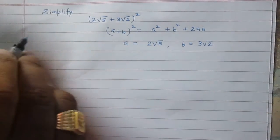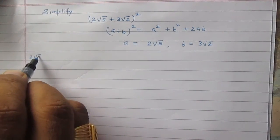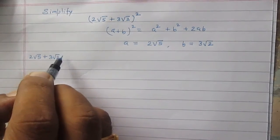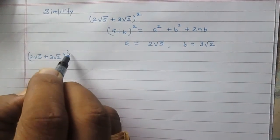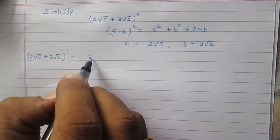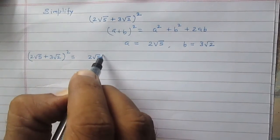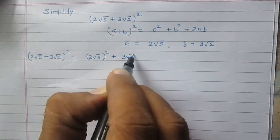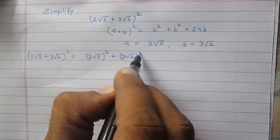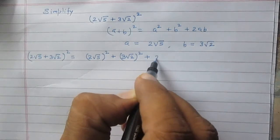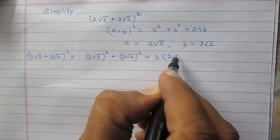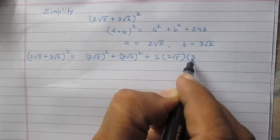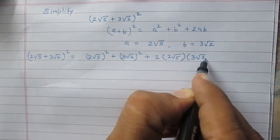We can write (2√5 + 3√2)² as a², that is (2√5)², then b², that is (3√2)², then 2ab, that is twice of 2√5 multiplied by 3√2.